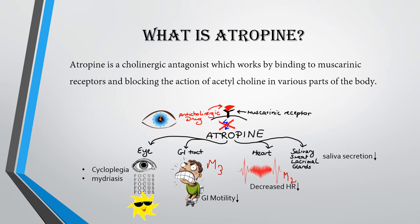Atropine is a cholinergic antagonist which works by binding to muscarinic receptors and blocking the action of acetylcholine in various parts of the body. Cholinergic antagonists are the type of drugs which block the muscarinic and nicotinic receptors and inhibit acetylcholine from performing its function.